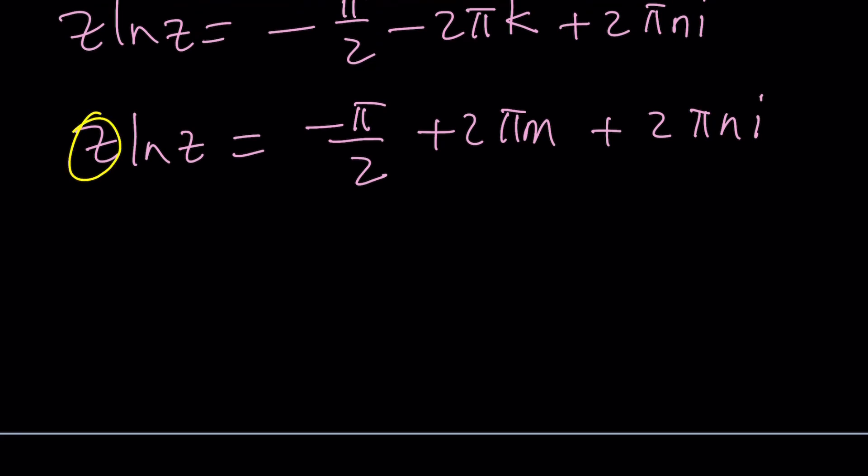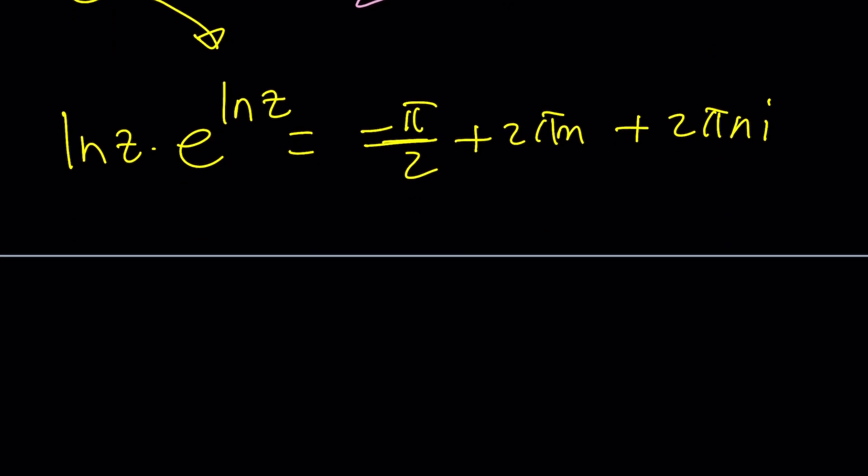First of all, write the z as e to the power ln z. That's what we can do with real or complex values. And then this is equal to negative pi over 2 plus 2 pi m plus 2 pi n i. Awesome. m and n are integers, they can be pretty much any integer. They don't have to be the same, by the way.